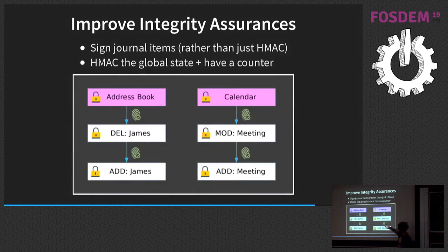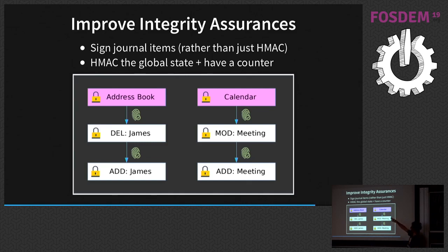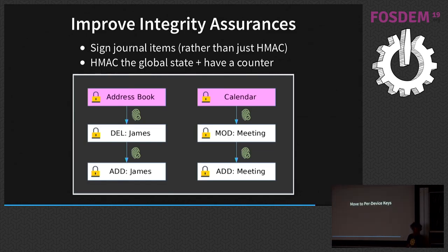Another improvement is to upgrade the integrity assurances. The earlier slide looked like a fingerprint but it's actually an HMAC — an integrity check — which is fine in almost every case. The problem is with shared journals: you can't cryptographically prove which participant made each entry. When EtterSync was originally designed there were no shared journals, so this was never considered. Also, the integrity checks apply to the journals themselves but not to the existence or absence of journals. I want to integrity-check the global state with a counter to prevent replay and downgrade attacks at that level.